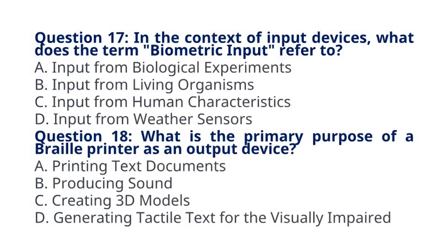Question 17: In the context of input devices, what does the term biometric input refer to? A. Input from biological experiments. B. Input from living organisms. C. Input from human characteristics. D. Input from weather sensors. The correct answer to question 17 is option C: Input from human characteristics. Biometric input involves using unique human characteristics such as fingerprints or facial features for input. Question 18: What is the primary purpose of a braille printer as an output device? A. Printing text documents. B. Producing sound. C. Creating 3D models. D. Generating tactile text for the visually impaired. The correct answer to question 18 is option D: Generating tactile text for the visually impaired. Braille printers create tactile text for the visually impaired using raised dots.